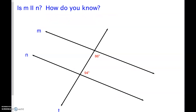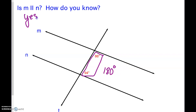Is M parallel to N? We have consecutive interiors, and 86 plus 94 equals 180 degrees. So if our consecutive interior angles are supplementary, then yes, these lines are parallel. The theorem we would use is the converse of consecutive interior angles.